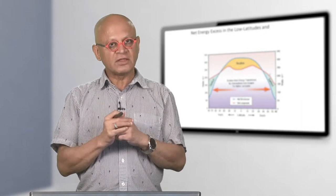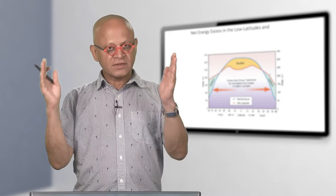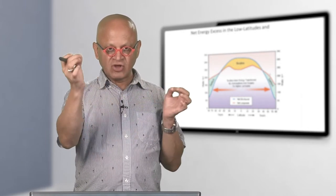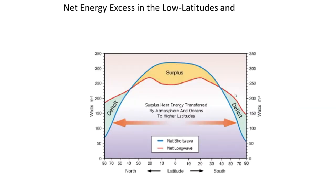If you put this all together and look at the net energy in a meridional section from equator to poles, you can see that when looking at short wave energy coming in versus outgoing long wave energy, there is a surplus of energy in lower latitudes. At higher latitudes, outgoing long wave together with reflected solar radiation creates a constant energy deficit — they are actually losing energy to space.